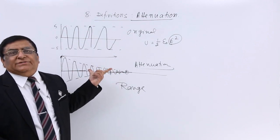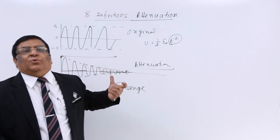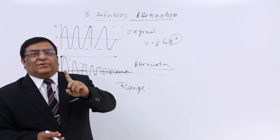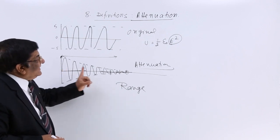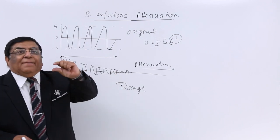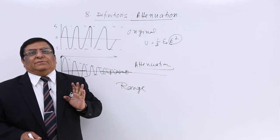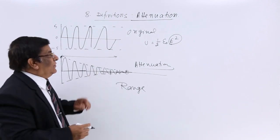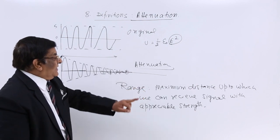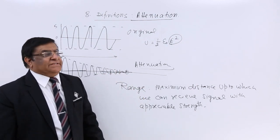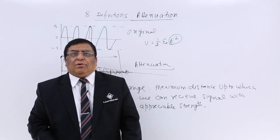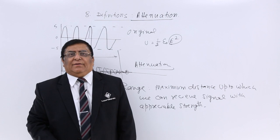So how can we define range? Answer: range of a signal is that distance up to which we can receive it with appreciable magnitude so that we get the signal clearly. So maximum distance up to which we can receive signal with appreciable strength—this distance is known as range.